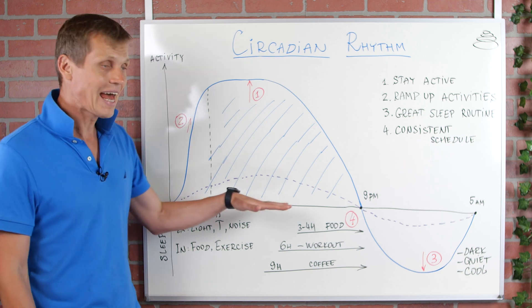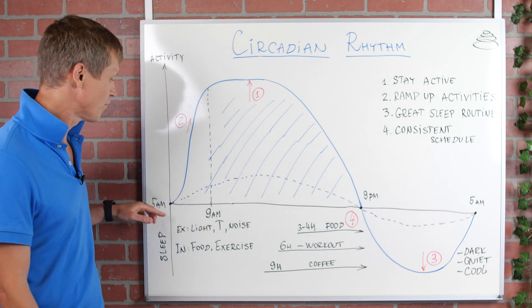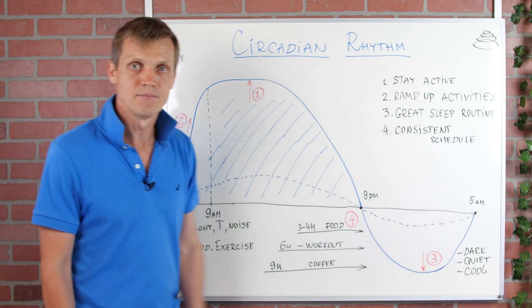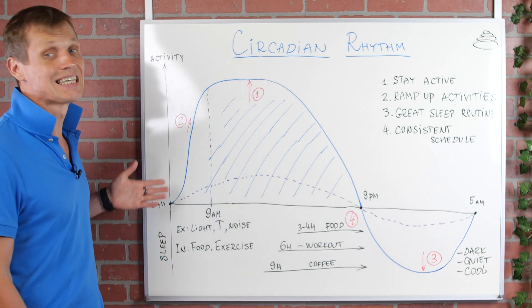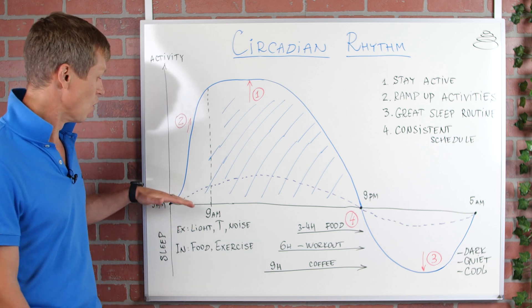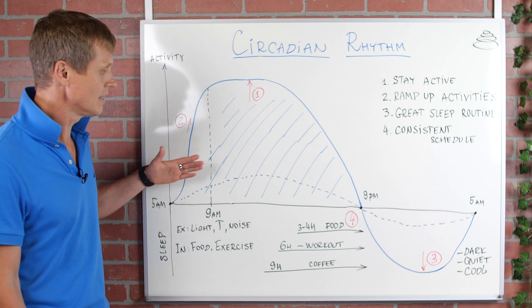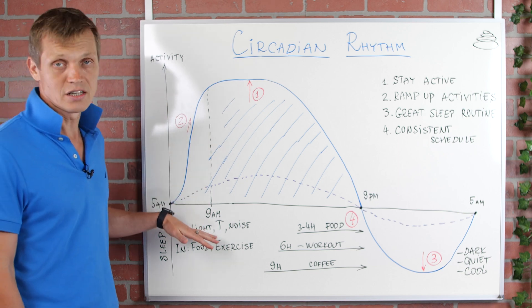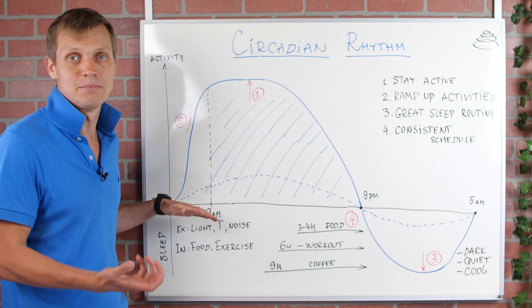The horizontal axis represents time, 24-hour period from 5 a.m. one day to 5 a.m. the next day. The vertical axis represents activity level. So when it's above the horizontal line, it means I'm awake, I'm active. And when it's below the horizontal line, it means I'm in the sleep state.